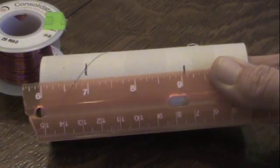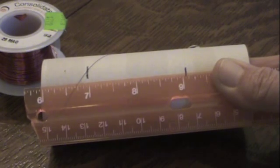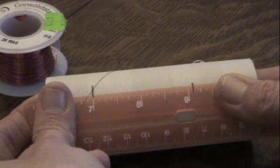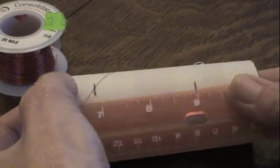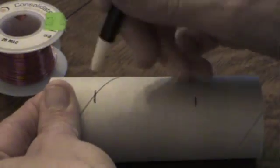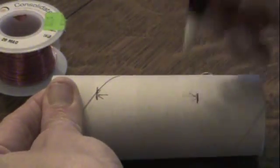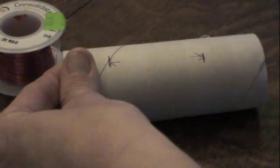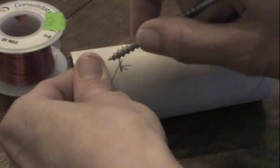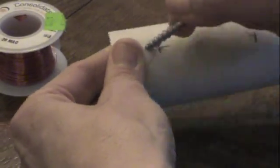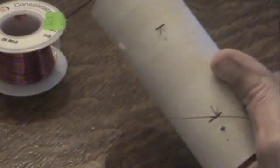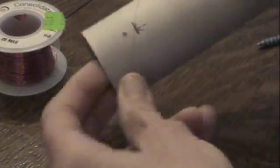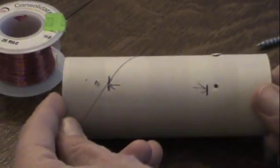I've made two marks with pen on the toilet paper roll, two and five eighths inches apart. My coil is going to run from here to here. Using my screw as a poker, I'm going to poke a hole here and a hole over here.